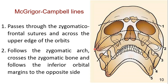The second line — here you can follow it — passes through the right zygomatic arch, right body of the zygoma, right infra-orbital margin, nasal complex, then left infra-orbital margin, left body of the zygoma, and left zygomatic arch.